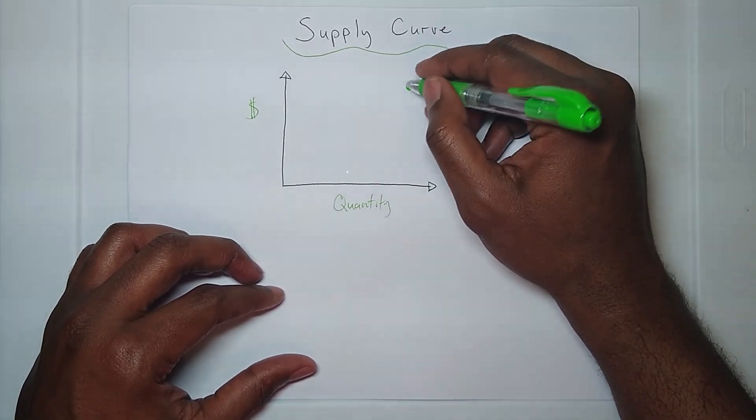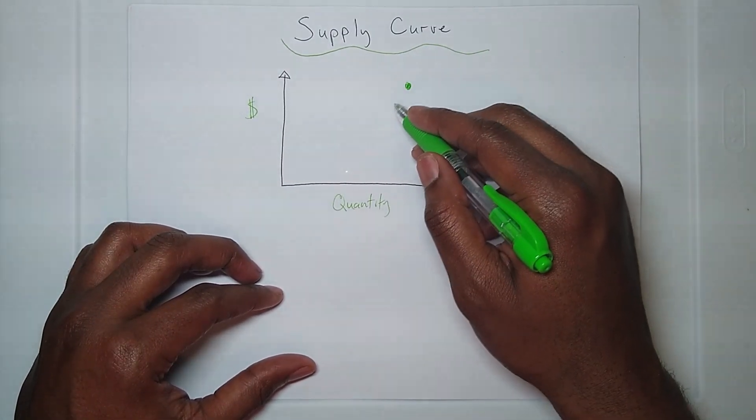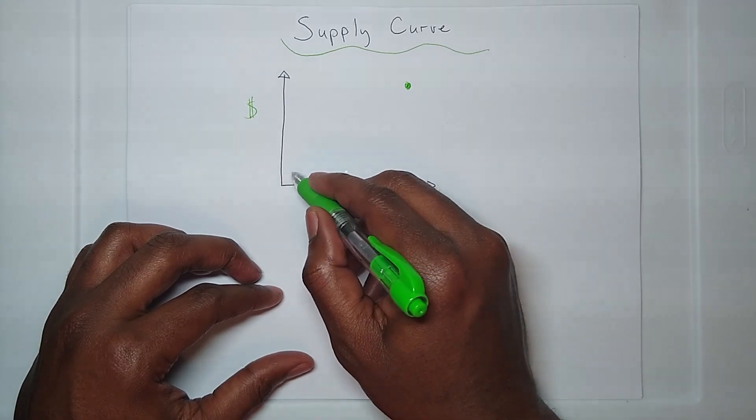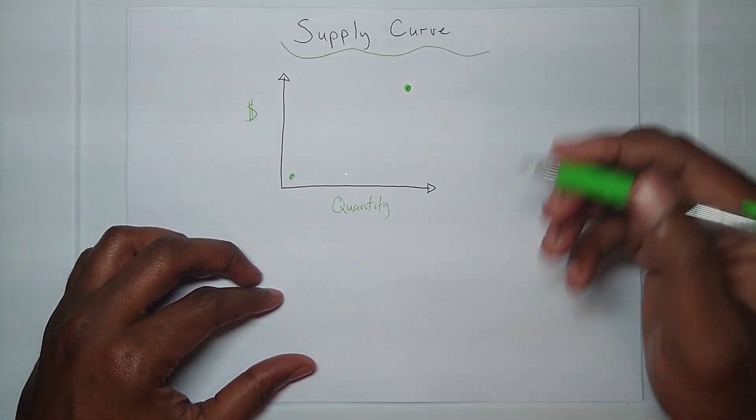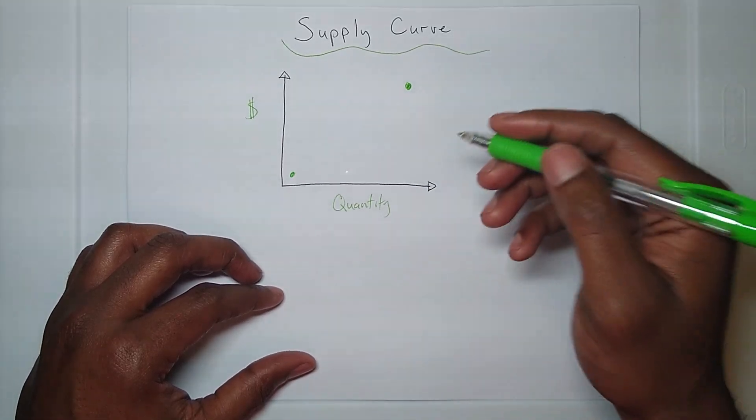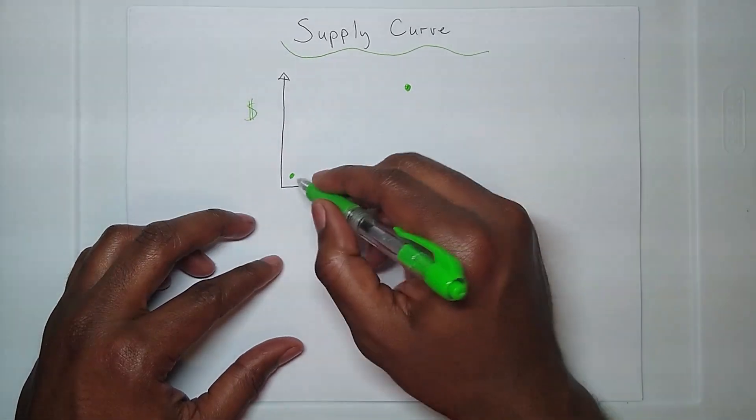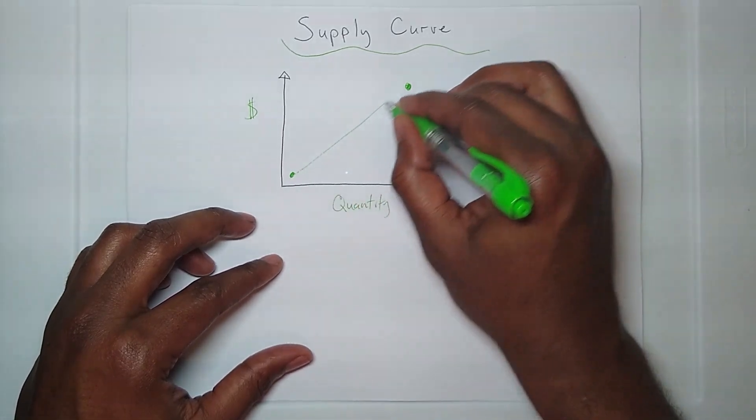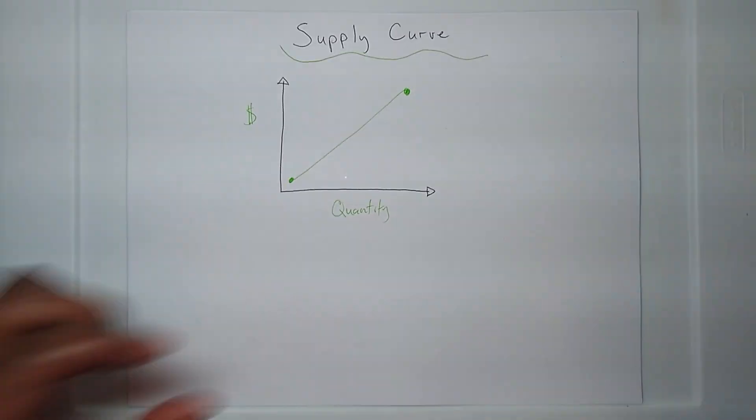They'll continue to do it as long as that price can be set high. But as the price starts decreasing, that provider would have less encouragement to continue to provide that same service at a high quantity. Therefore, your supply curve has a positive relationship between these two variables.